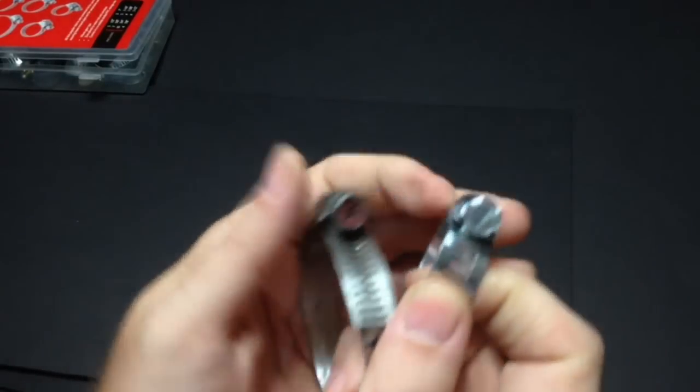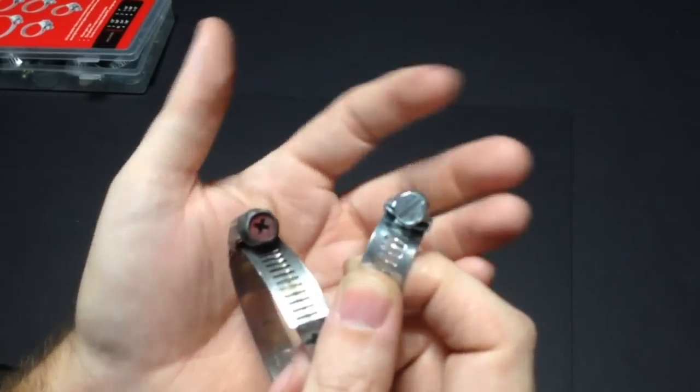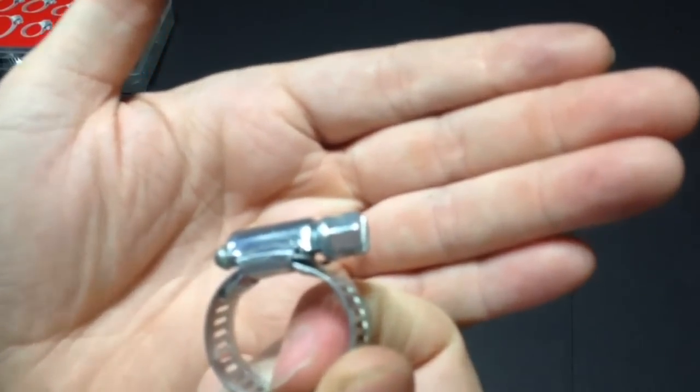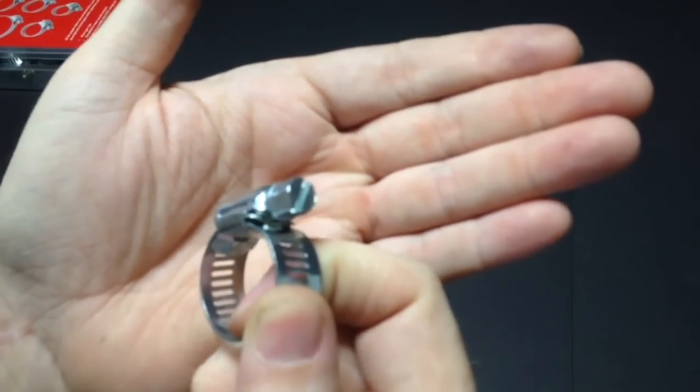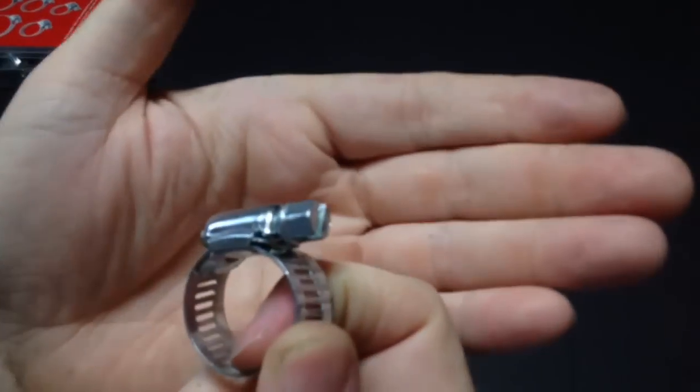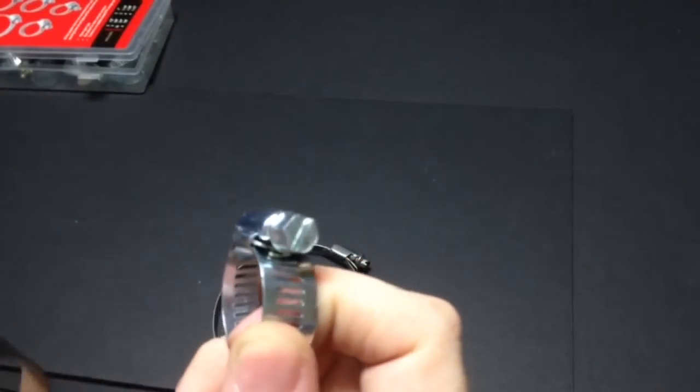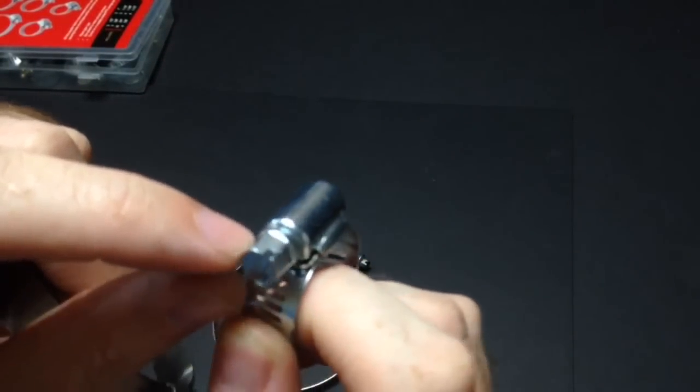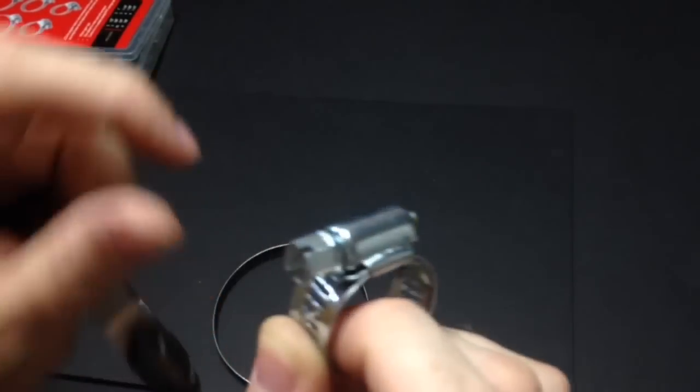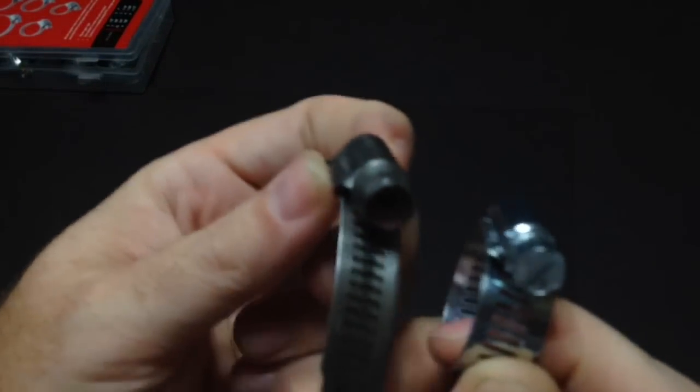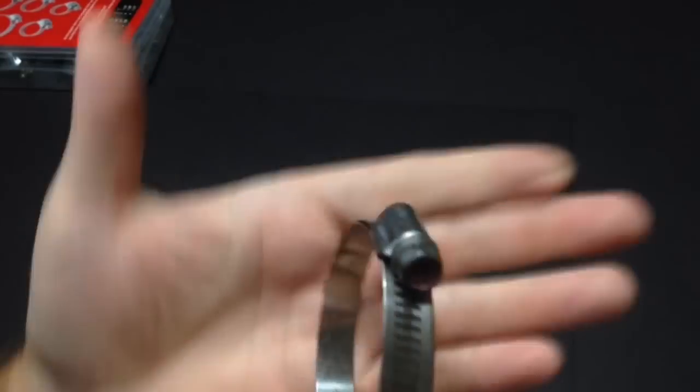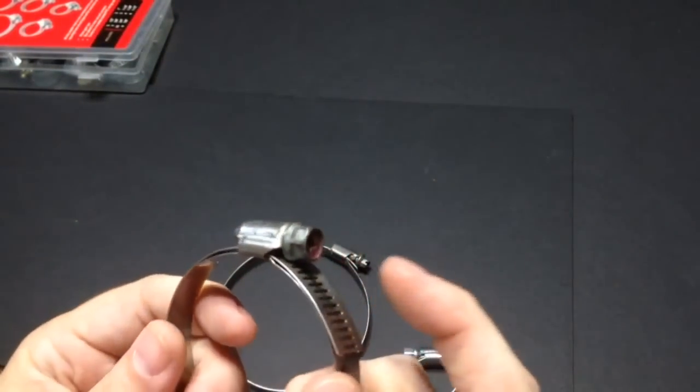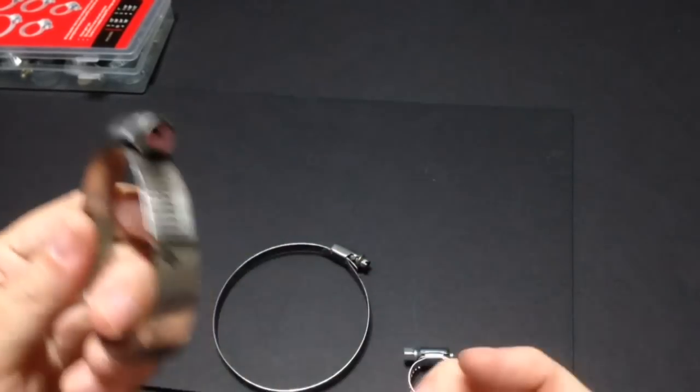The one on the right is a Harbor Freight clamp. If you go to use a socket on it, it is a little bit funky. It does have a tendency to round off pretty easy. You can see the points your socket goes on, they're a little bit rounded. This guy here is a little bit better, and you could actually hog down on that pretty good.